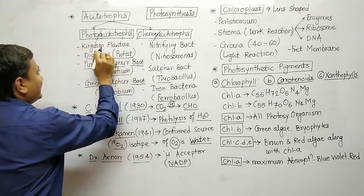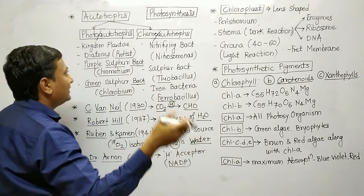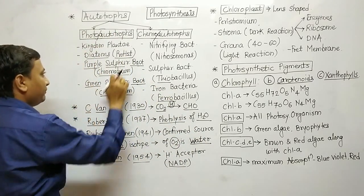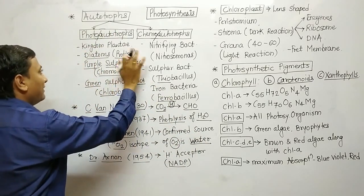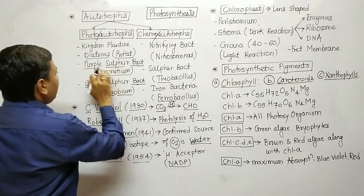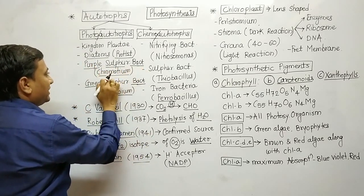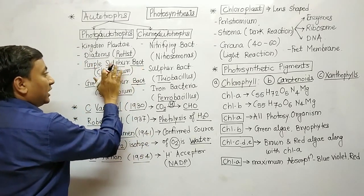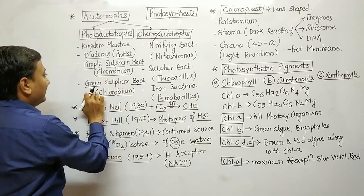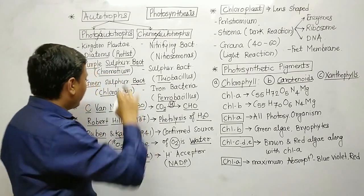In photo-autotrophs, examples include kingdom Plantae — that is, almost all plants. The family also includes diatoms, purple sulfur bacteria (also called Chromatium), and green sulfur bacteria (also called Chlorobium). These are all photo-autotrophs.